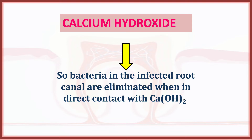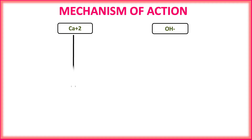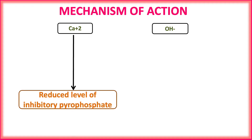Now let's understand this in summary form. On contact with aqueous solution, calcium hydroxide dissociates into calcium ions and hydroxyl ions. What do calcium ions do? They reduce the level of inhibitory pyrophosphatase.